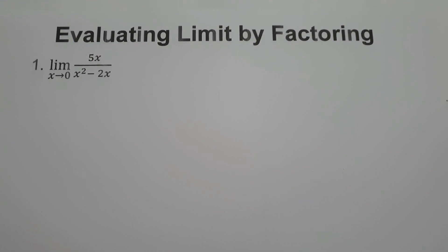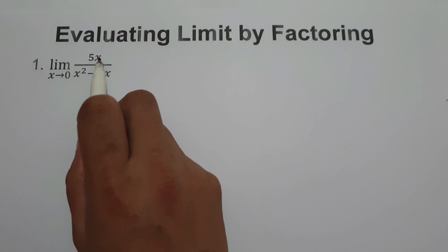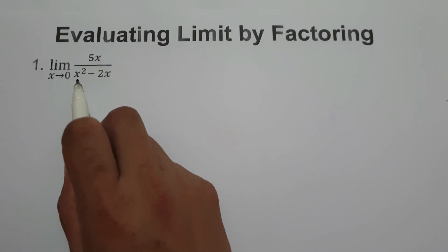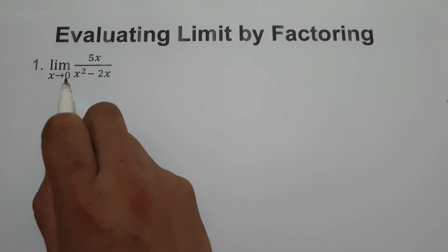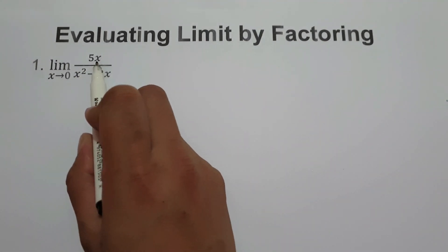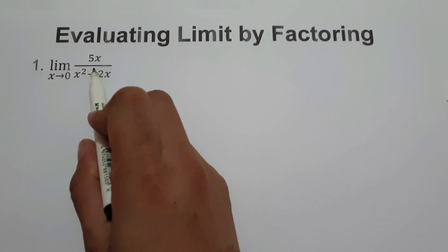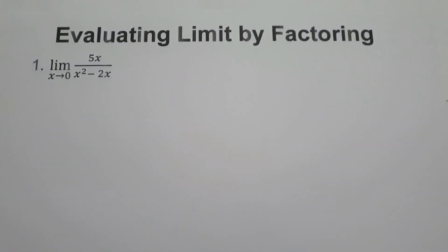In this video, we are going to have a practice problem on how to evaluate limits using factoring. On the first example, we have the limit of 5x over x squared minus 2x as x approaches 0. If we substitute directly the value of x, we will end up with 0 over 0, which is indeterminate.